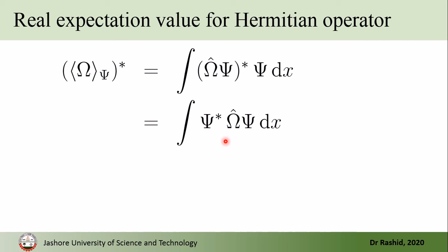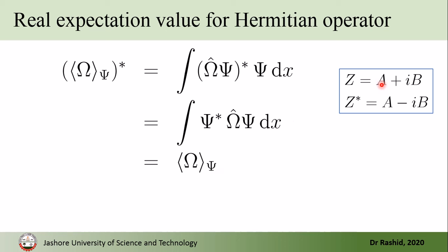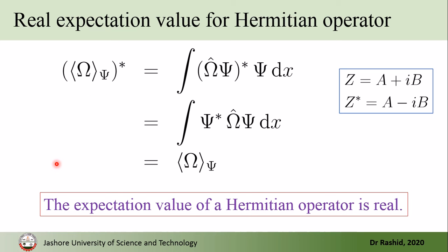After applying Hermiticity, the result is nothing but the expectation value of omega-hat. So we arrive at: the complex conjugate of the expectation value equals the expectation value itself. We know that if z = a + ib, z* = z only if b = 0, meaning the number is real. Therefore the expectation value of a Hermitian operator is real — the first property is proved.